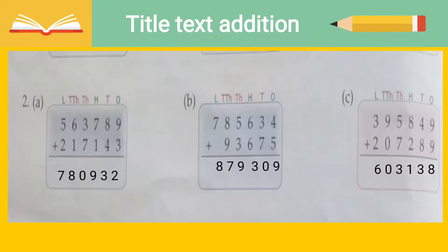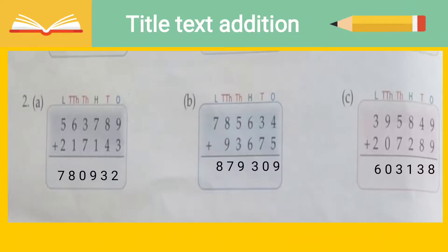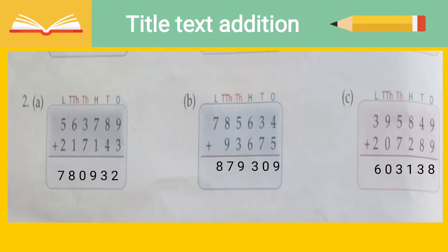The digits we have are 563,789. We have to add 217,143. Remember: while adding, we always start from the ones place value on the right-hand side, and carry any digit when the sum reaches ten or more. So nine plus three is twelve — one carry forward. Eight plus four is twelve, plus one is thirteen — one carry forward. Seven plus one is eight. Then nine plus seven... wait — seven plus three is ten, one carry forward. Six plus one is seven, plus one is eight. And five plus two is seven.